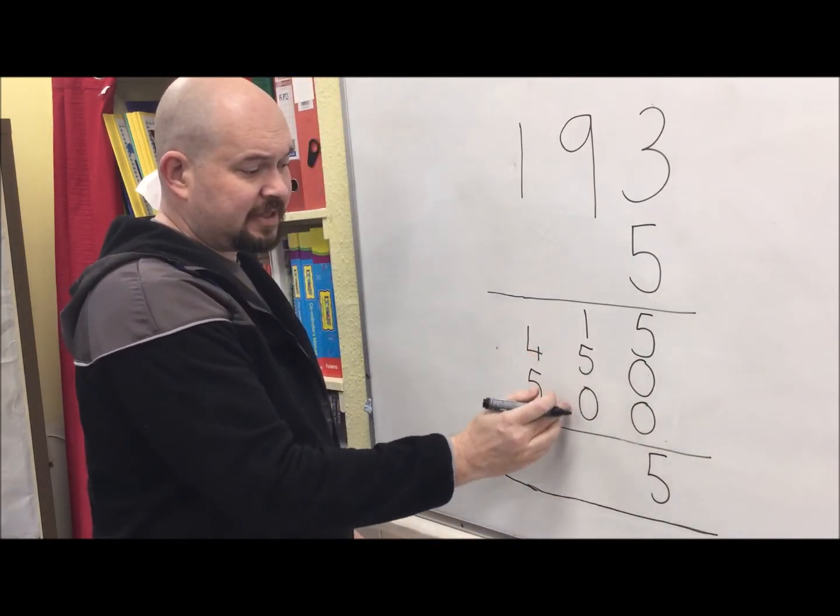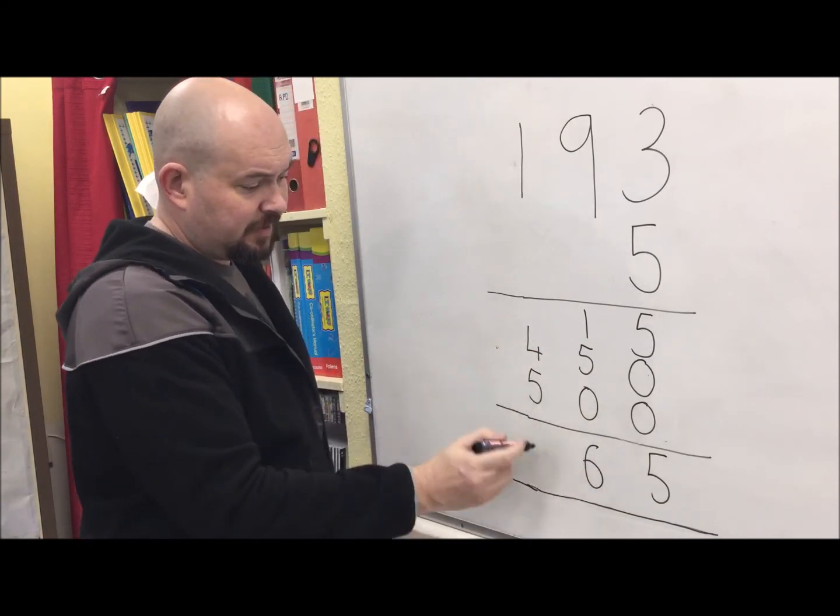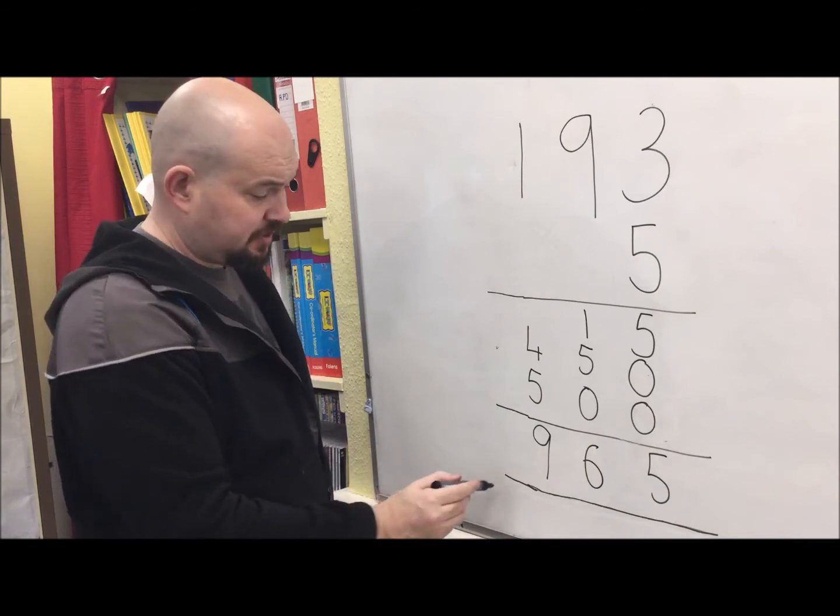1 and 5 makes 6, nothing, 60. 4 and 5 here makes 9. Answer 965.